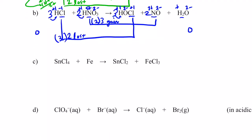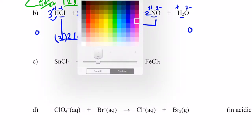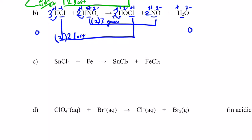Let me do letter C with you and then you can take a crack at letter D. Step one — assign everybody an oxidation number. Chlorine is more electronegative than tin — its charge is negative one, which makes the tin positive four on the reactant side. Iron is an element on this side, so its oxidation number is zero. On the other side, chlorine is negative one and tin is positive two. Chlorine is negative one and iron is positive three. Now let's balance the atoms whose oxidation number changed. Tin went from four plus to two plus — one tin on both sides, they balance. Iron went from zero to three plus — one iron on both sides, they balance as well.